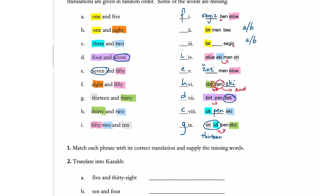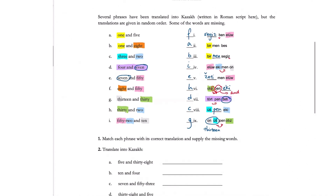Then we can easily figure out what a and b are. Because a and b start with the same letter, the 'and' will be the same as well, which is 'men.' Now we can move on to number two: translate into Kazakh.